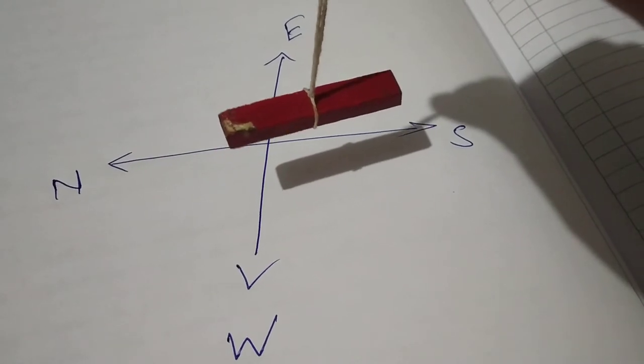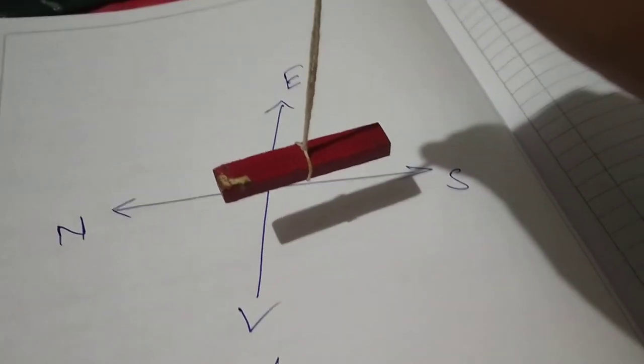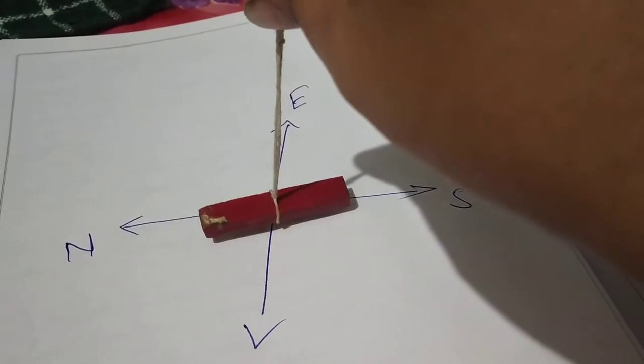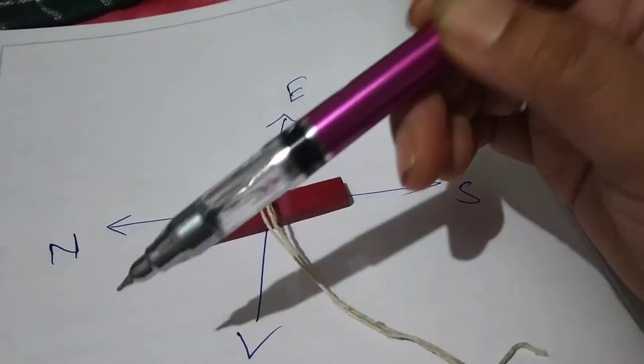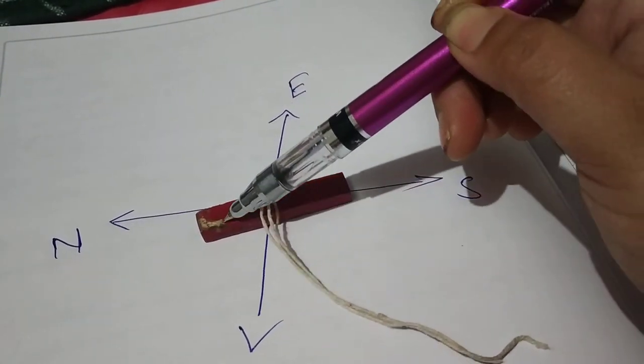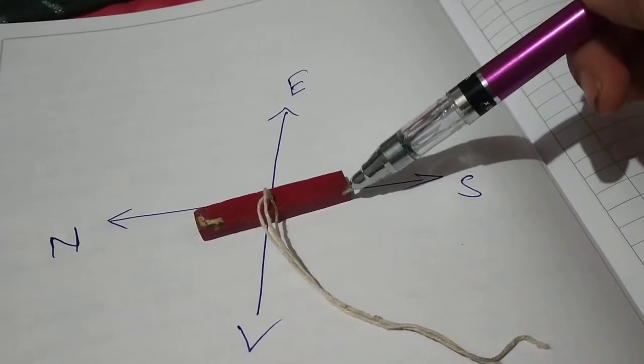That's how the bar magnet is behaving in a suspended mode. Here you can say that the end which is pointing towards the north is the north pole of the bar magnet, and the opposite end which is pointing towards the south is the south pole of the magnet.